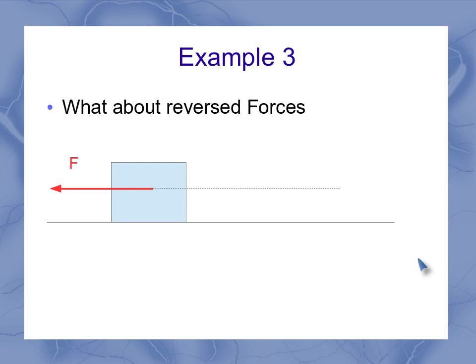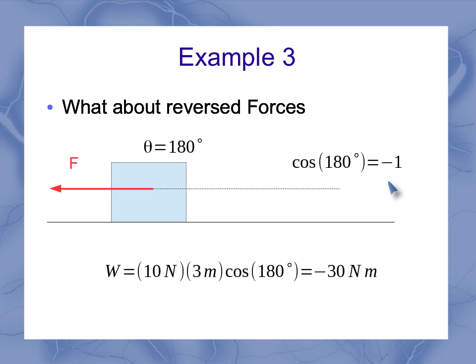The most extreme obtuse angle would be if it's completely reversed or an angle of 180 degrees. Well, the cosine of 180 is minus 1. So when I plug this all in, I get minus 30 newton meters. So that's the maximum negative work I could possibly have in this particular situation.